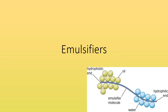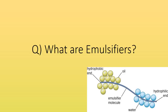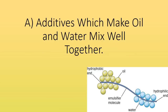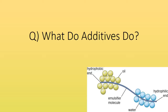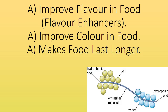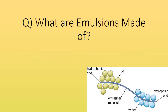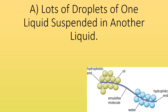Emulsifiers. What are emulsifiers? Additives which make oil and water mix well together. What do additives do? Improve flavour in food, improve colour in food, make food last longer. What are emulsions made of? Lots of droplets of one liquid suspended in another liquid.